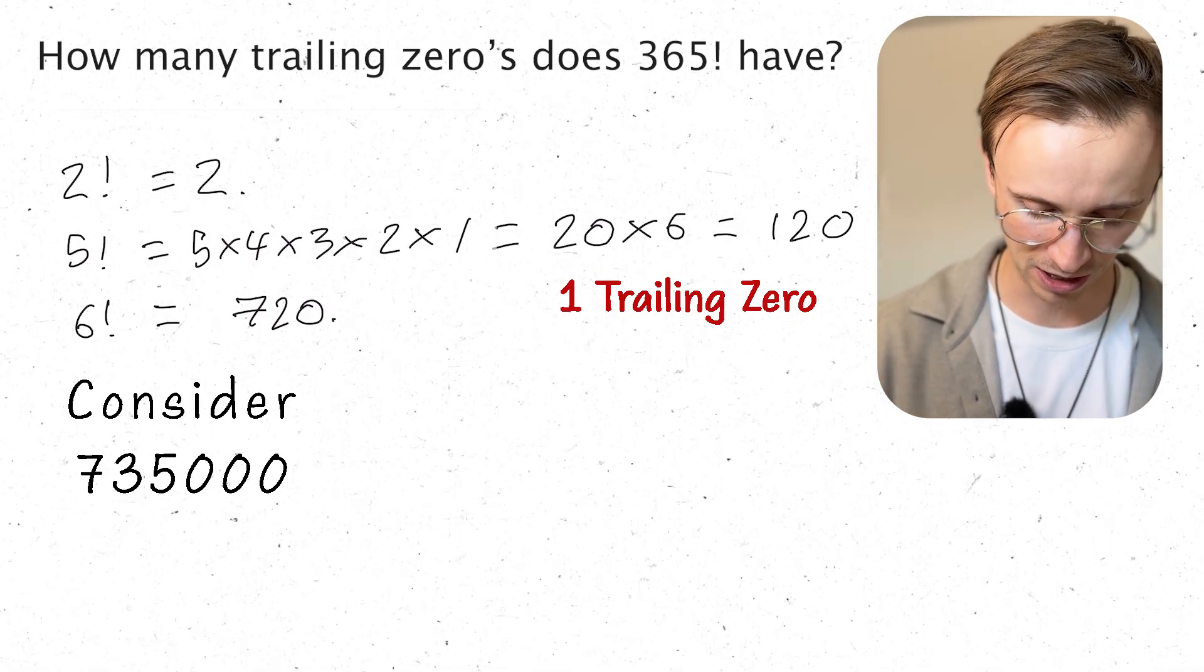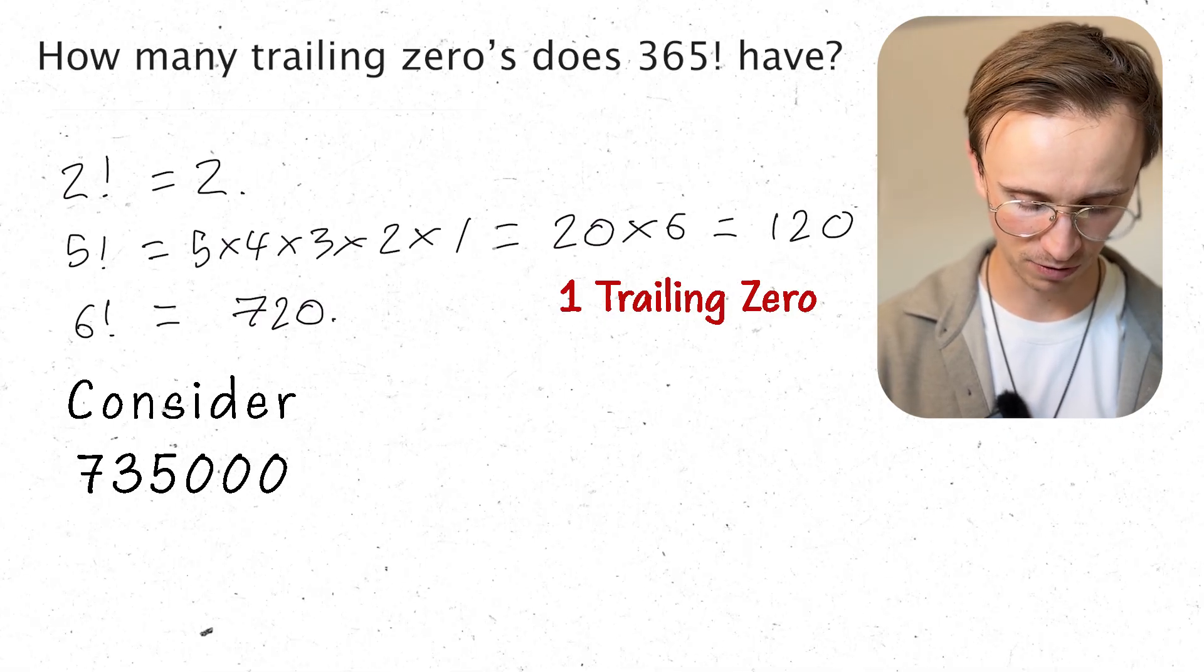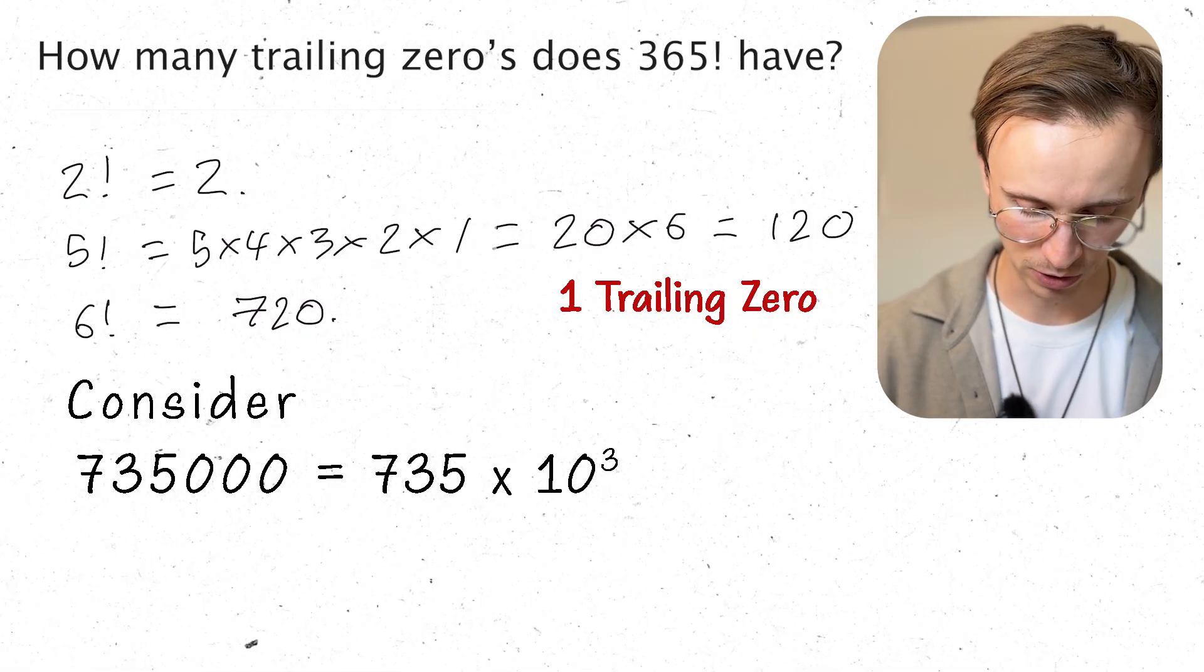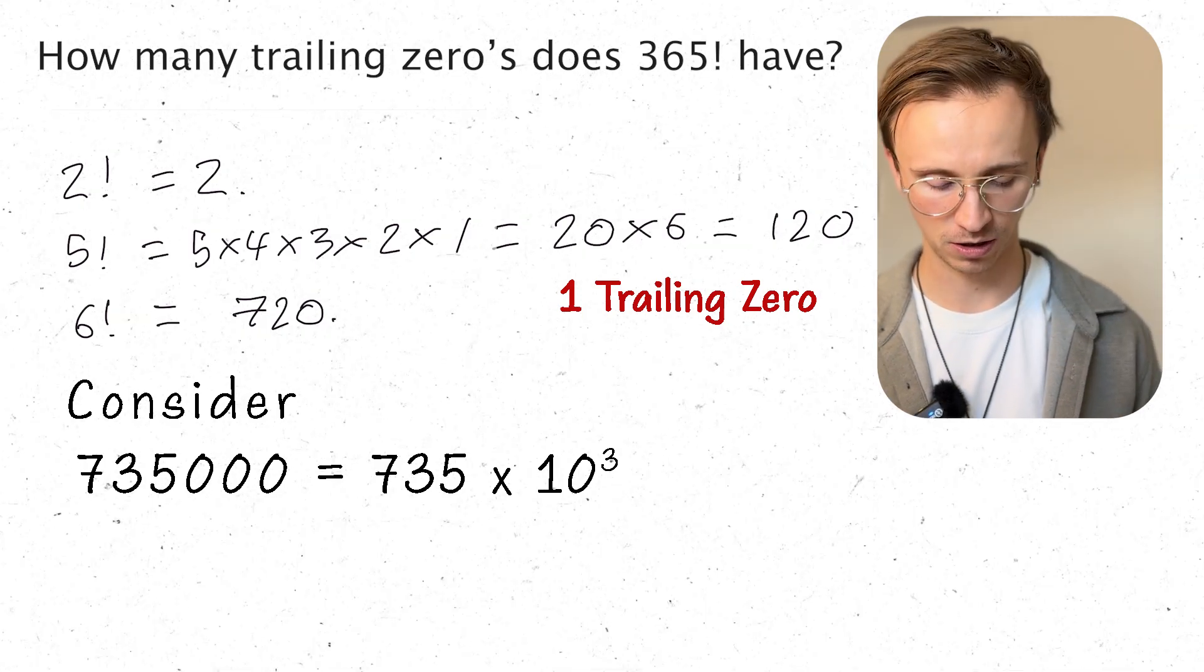Because anything with a trailing 0 at the end I could write as, so let's say I had something awful like 7, 3, 5, 0, 0, 0. I could write that as 735 times 10 to the power 3. So there must be some factors of 10 in there.